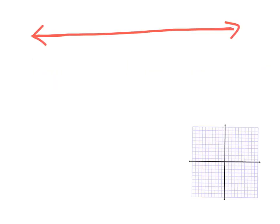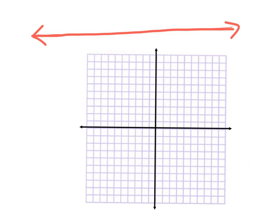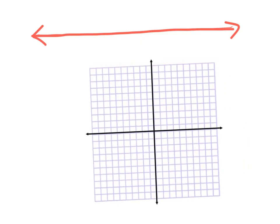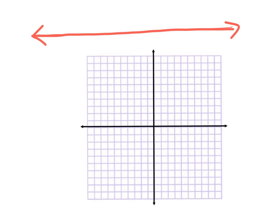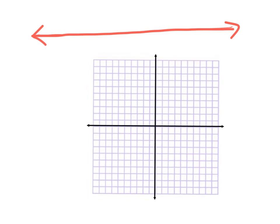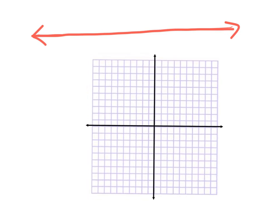So the first thing we are going to talk about is numbering a coordinate grid. This right here is called a coordinate graph. It's a little different than ones we have seen in the past. Before, we usually only had one section. Now we're going to have four sections. I'm going to show you how this is actually made.